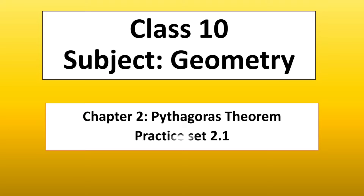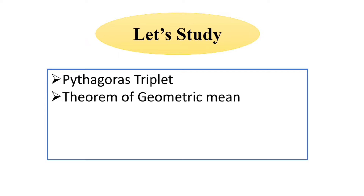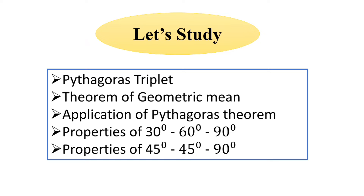Practice at number 2.1. Before we start, let's study Pythagoras triplet in this chapter, theorem of geometrical mean, application of Pythagoras theorem, property of 30-60-90 degree and property of 45-45-90 degree.